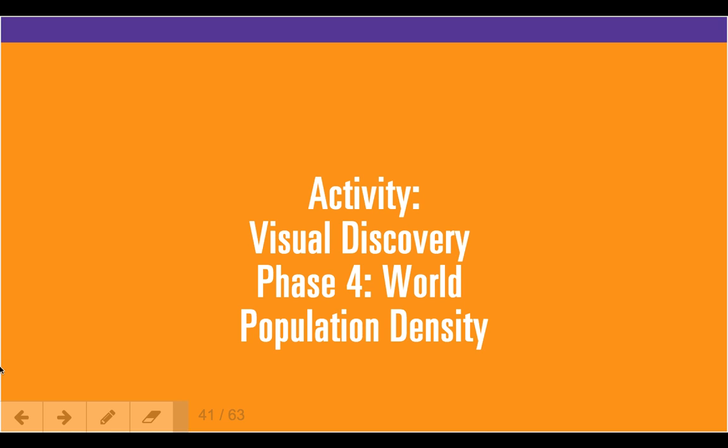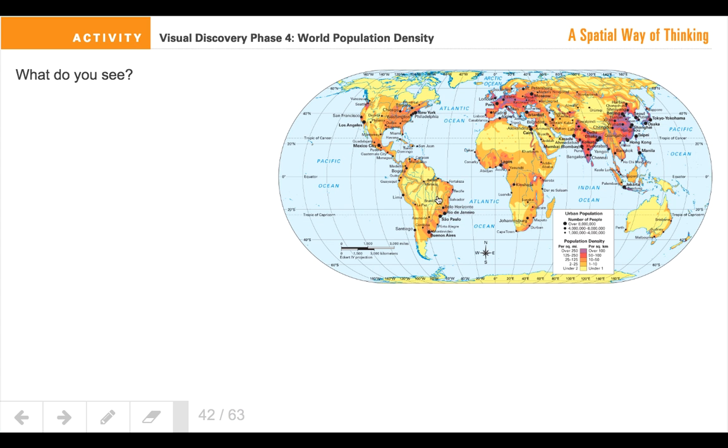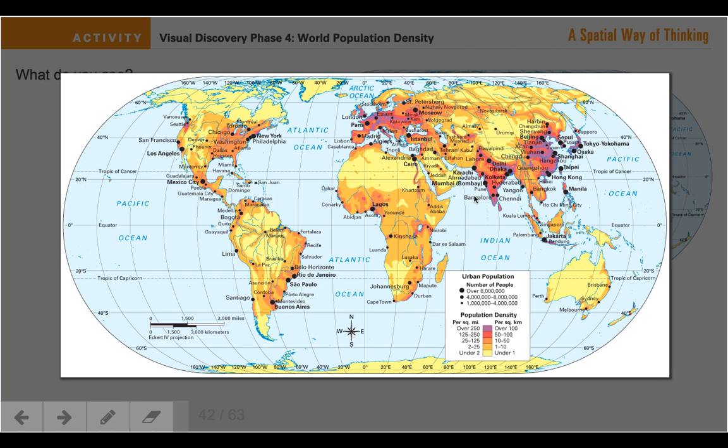We're going to take a look at a new thematic map with the theme being world population density. That simply can be shown as how many people live in a particular area on the Earth. So let's take a look at our map here. What do you see? Take a look at it, look at some of the things that we know about maps and try to figure out what everything means on this map.